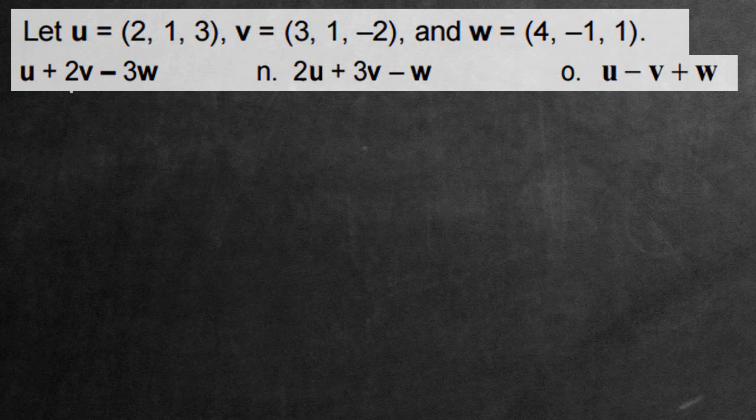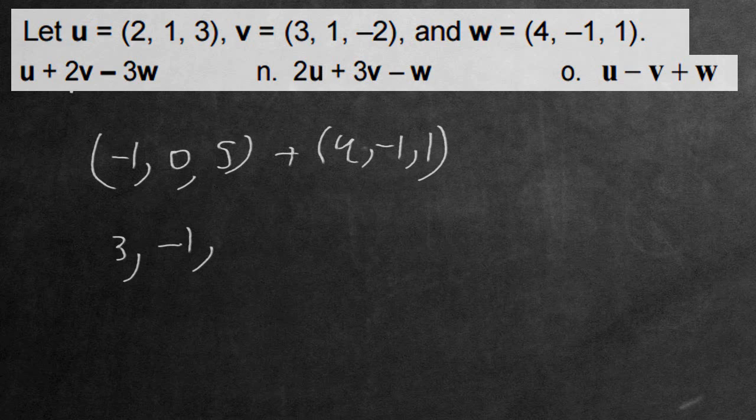Let's move on to the last question. It's going to be 2 subtract 3, that's negative 1. We have 1 subtract 1, which is 0. 3 subtract negative 2 is going to be 5, and this was the u subtract v part. Now let's add on w, which is (4, negative 1, 1). Adding it on, we're going to get 3, negative 1, and 6. And that is the correct answer.